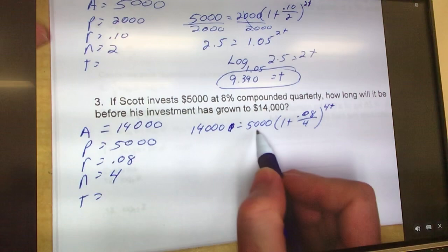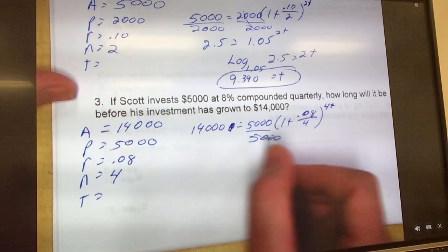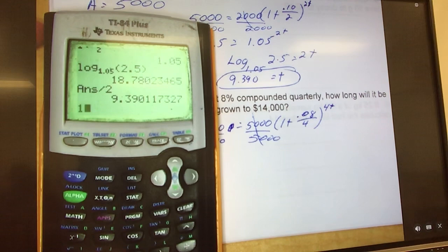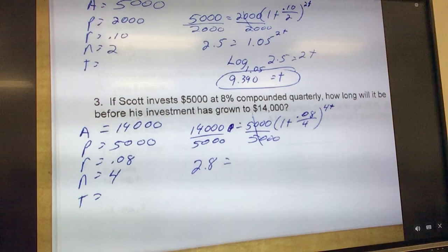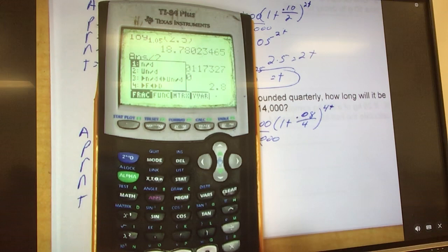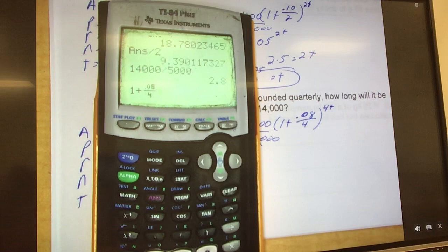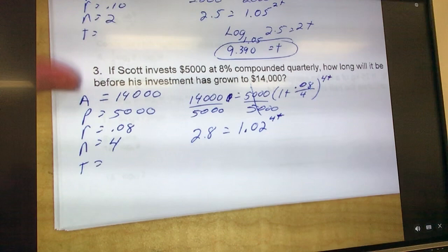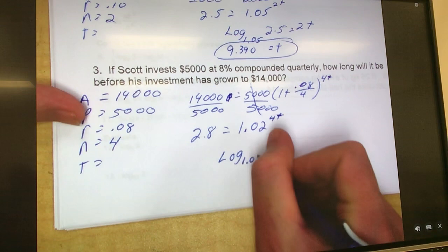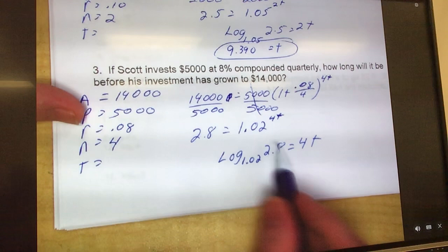We put in $14,000 equals $5,000 times 1 plus my rate, which is 0.08, over N, which is 4, raised to the 4T power, because we don't know the time. So the first thing I'm going to do is, same as I did on the one before, divide by $5,000, and that leaves me $14,000 divided by $5,000, which is 2.8, equals, and we do the math on this right here, 1 plus 0.08 over 4, hit enter, 1.02, raised to the 4T power. So I'm going to convert this exponent to a log. What's the base? 1.02. Log base 1.02, 2.8 equals 4T.